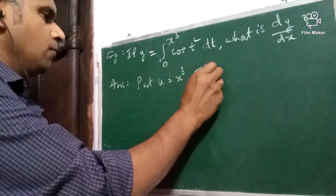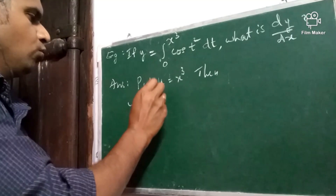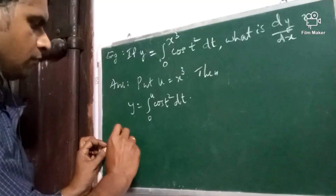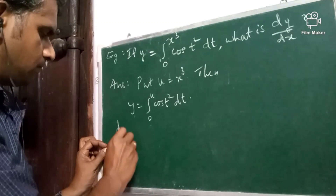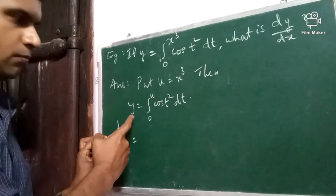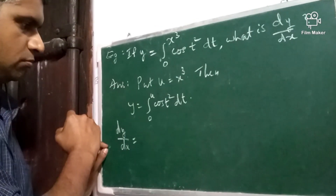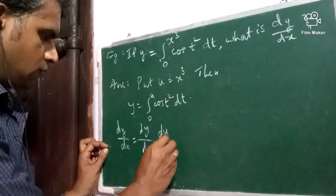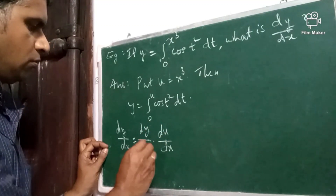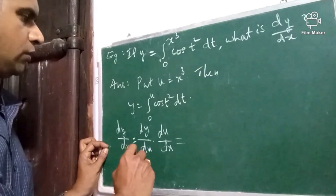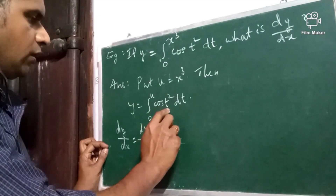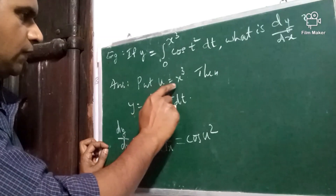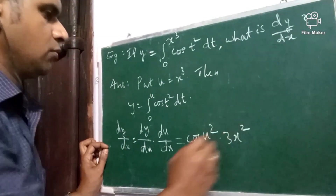With u = x³, we have y = ∫₀ᵘ cos(t²) dt. Now we shall compute dy/dx using the chain rule: dy/dx = (dy/du)·(du/dx). dy/du is the value of the integrand at the upper limit u, so it is cos(u²), multiplied by du/dx, which is 3x².